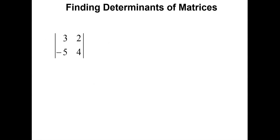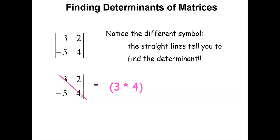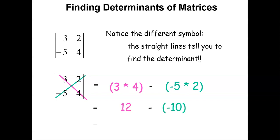Let's find the determinant of matrices. We have been given a 2 by 2 square determinant. The straight line symbol tells you to find a determinant — if it was a bracket, it's a matrix. To solve: multiply the two diagonal numbers, three times four, then put a subtraction sign, and multiply the remaining two, negative five times two. When you simplify, the answer is 22.